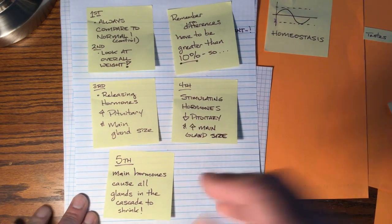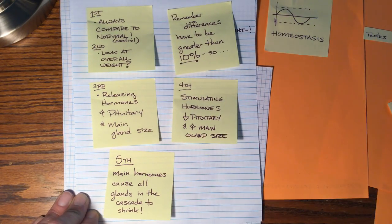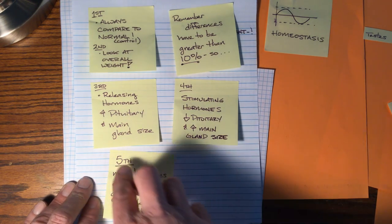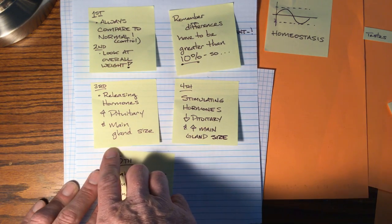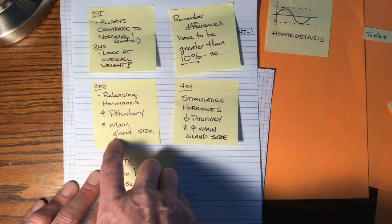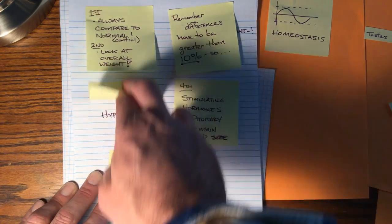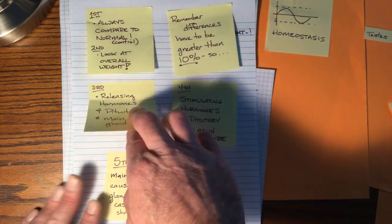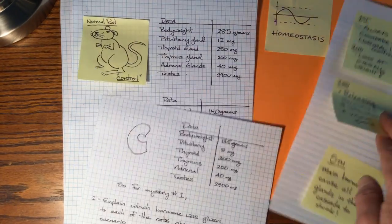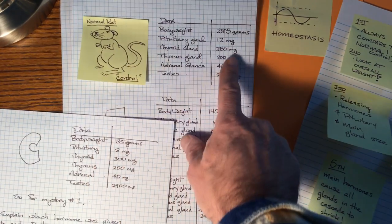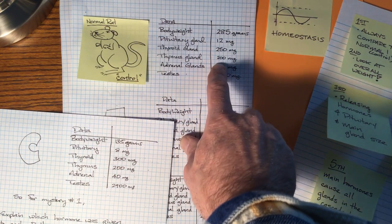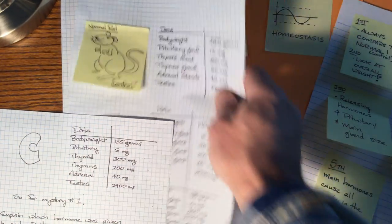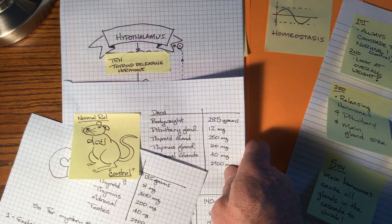Now, now you need to look at the pathway again. Hopefully you've written the pathway down. If not, go back and do that. Releasing hormones will always increase the size of the pituitary gland and increase the size of the main gland. It will cause what we know as hypertrophy in both glands. So if you see, compared to the control that both pituitary grew and the thyroid gland grew, then it is definitely thyroid-releasing hormone.